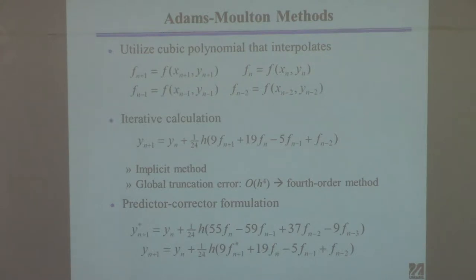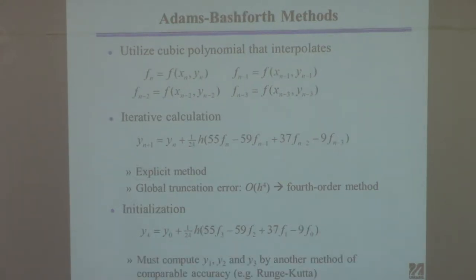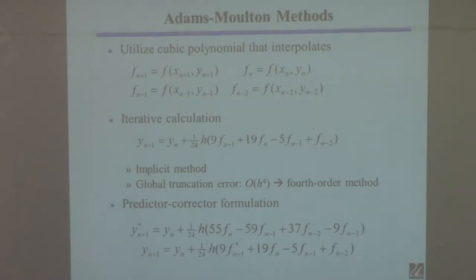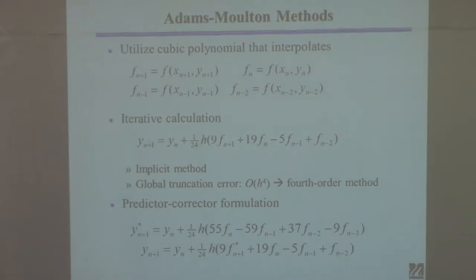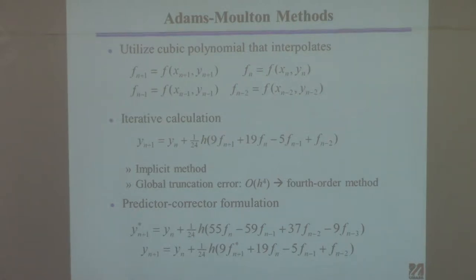There's another method that does a different interpolation. By interpolating four points you get an explicit method. If you interpolate those four points but include (x_{n+1}, y_{n+1}) as one of them, you'll get a somewhat similar equation except now you'll have an implicit method — because computing y_{n+1} requires evaluating a function that depends on y_{n+1}. So with an implicit method, you have to use an iterative scheme.